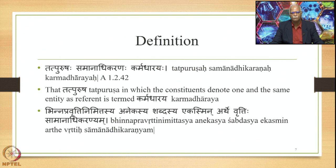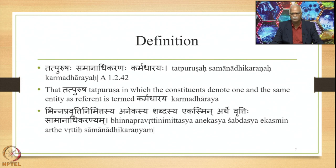In the tatpurusha compound there are two words denoting two different entities. But when they denote one and the same entity as referent — they may denote different meanings but refer to the same entity — this type of tatpurusha is termed karmadharaya. The feature is samanadhikarana, also known as samanadhikaranya. It is defined as: Bhinna pravritti nimittasya anekasya shabdasya ekasmin arthe vrittihi samanadhikaranyam — when different words having different pravritti nimittas refer to one and the same entity, the words are said to be in the relation of samanadhikaranya, co-referentiality.